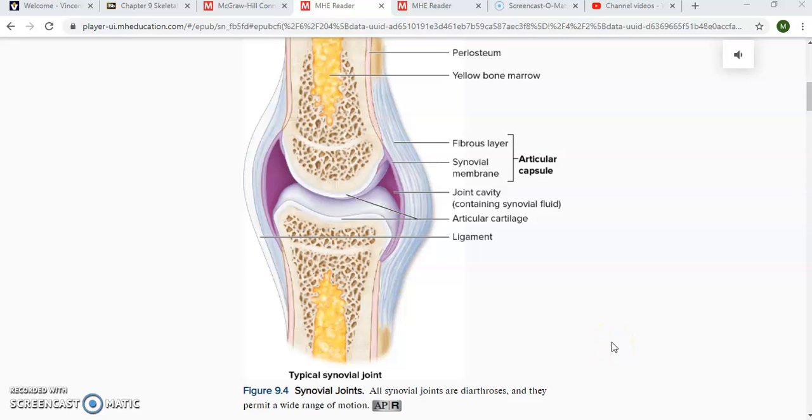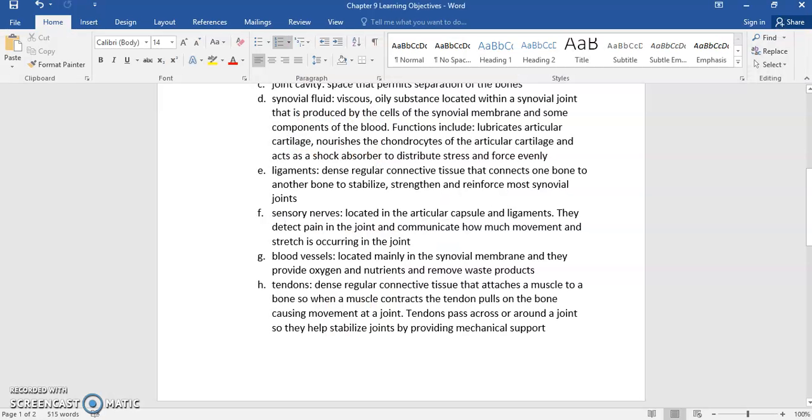All right, AMP1 students, we're going to finish up talking about the basic structures of a synovial joint. So in the last video, we ended talking about the synovial fluid, and now we're going to talk about ligaments in this video, sensory neurons, blood vessels, and then tendons.